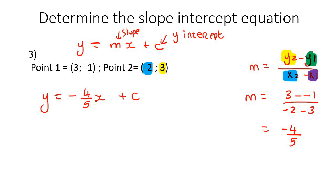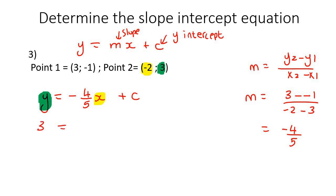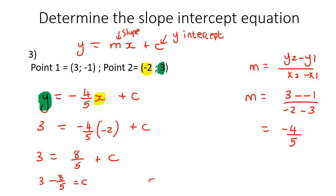To find c, we choose a point. I'll choose the one where negative two is the x-value and three is the y-value. So three equals negative four over five times negative two plus c. Negative four over five multiplied by negative two gives positive eight over five. To get c by itself, we take the eight over five to the left: c equals three minus eight over five. Doing that on the calculator gives c equals seven over five. So the final answer is y equals negative four over five x plus seven over five.